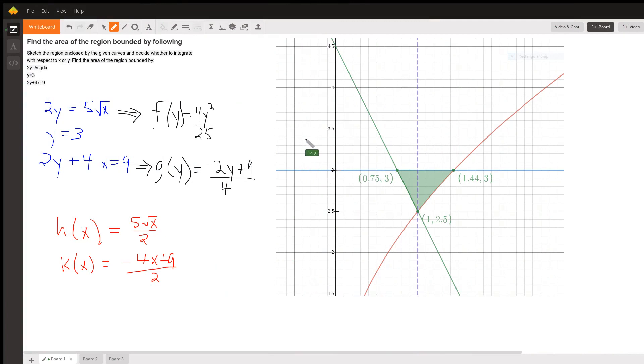Okay, here's the graph of the three curves that are bounding this region in green here. This green line right here is the 2y plus 4x equals 9. The red graph is 2y equals 5 radical x.